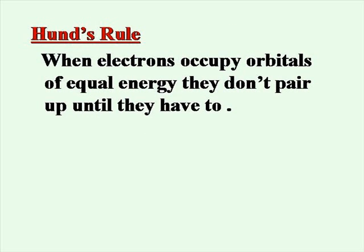Hund's rule states that when electrons occupy orbitals of equal energy, they won't pair up until they have to. Obviously, they would prefer to stay as far away as possible. So they will fill up orbitals separately and then pair up only when they have to.